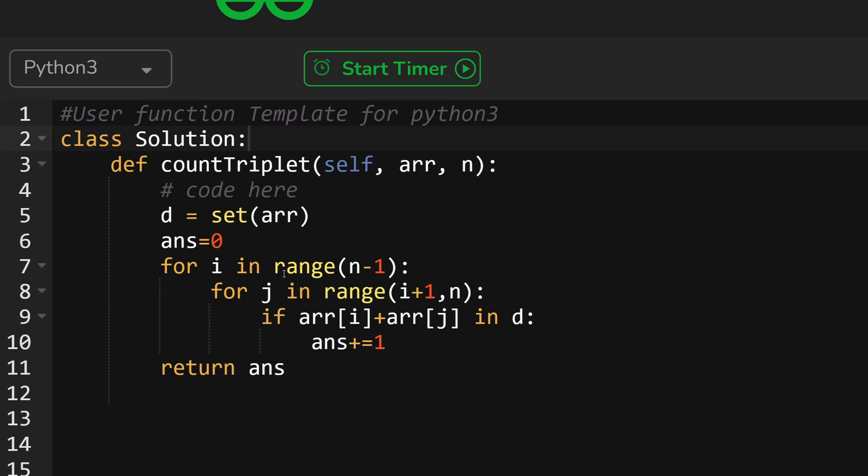First one will be having i index, and second one will be having j index. J index will always start from i plus 1 index only. So in this way, we will get all the possible combinations for two values, and we will be checking that sum is present inside the set variable or not.